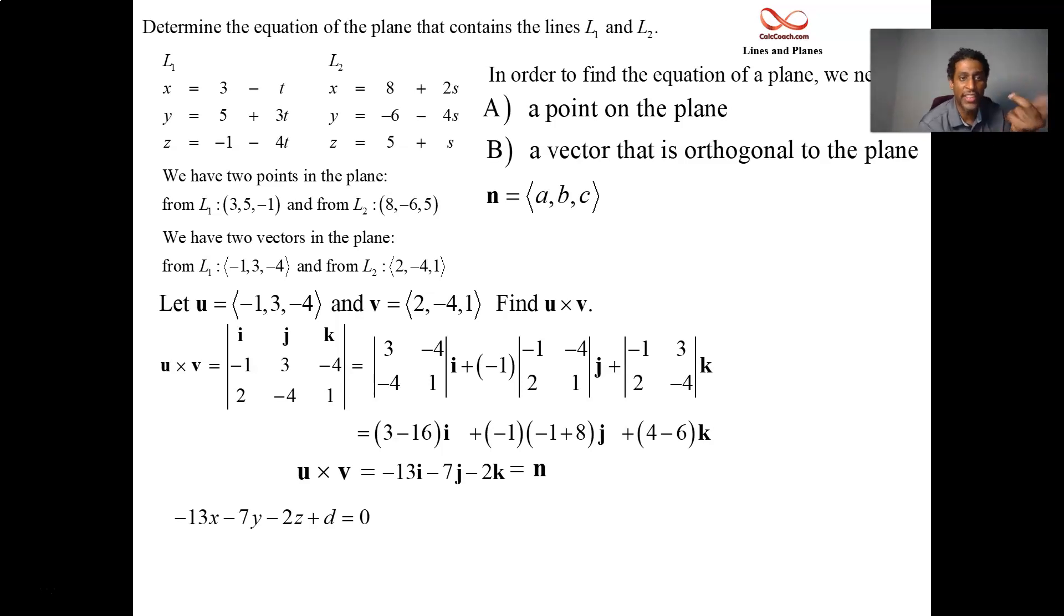And the way we're going to figure it out is by taking our point. Either of these two points. Let's take the first point, 3, 5, negative 1. See, this is supposed to be true for all points that are on the plane. 3, 5, negative 1 is on the plane. So if we plug that in, that'll take place of the X, Y, and Z, leaving us only with D to figure out. And a negative 39 and a negative 35 and a positive 2 get combined to be 72. Or negative 72. But we push to the other side saying that D is equal to 72. So now you have your equation. Negative 13X, negative 7Y, negative 2Z plus 72. It's equal to 0.